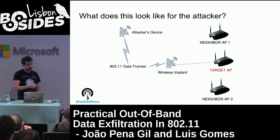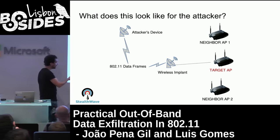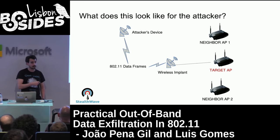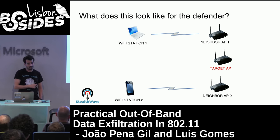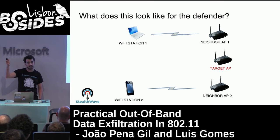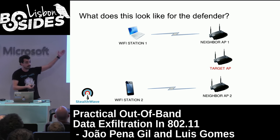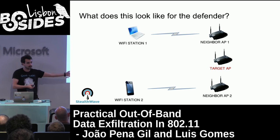Here's how it works for the attacker: drop the implant, connect it to the target, and send data frames to the other device. What the defender sees is different — the actual implant scans neighboring APs, picks one at the appropriate signal strength, and emulates that AP sending a message to a station even further away that the defender can't see. For the defender, they can only assume they see half the conversation — the AP side — because the station is too far away. The client side does the exact same procedure: scans the airspace, finds an AP to spoof, and starts sending packets.